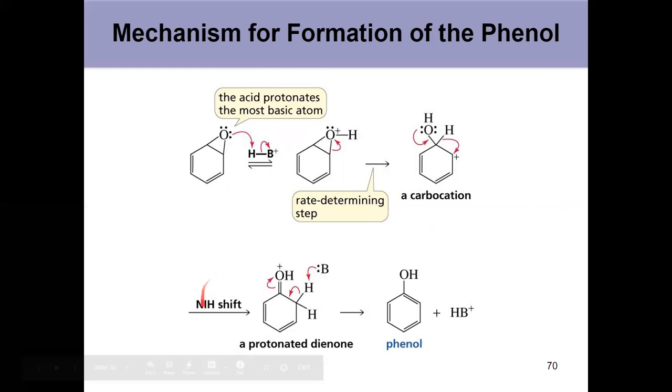Then we have a hydride shift going from top right to the bottom left here. That's what's called an NIH shift because that's where it was first discovered. That hydrogen shifts over at the same time this lone pair of electrons comes down, forms what's known as a protonated dienone. So diene from these two alkenes, diene, and own from that double bonded oxygen. Then we just pluck off a hydrogen right here. Those electrons restore the aromaticity and we formed our phenol.